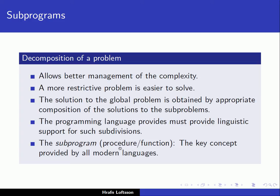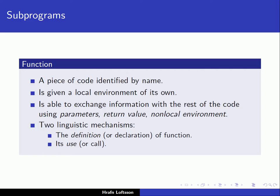There is often a distinction between a procedure and a function. A procedure in general does not return a value, whereas a function returns a value. This subprogram concept is key to all modern languages, though the very first languages did not have the ability to define subprograms. Here, we use the term function as a name for both procedures and functions — a function that could or could not return a value. In C or C++, everything is a function; if it doesn't return a value, it returns a special value called void.